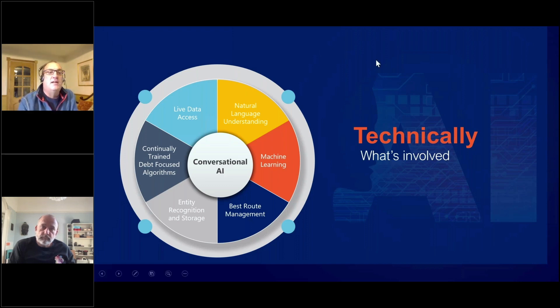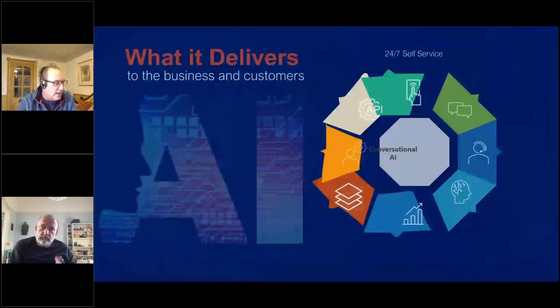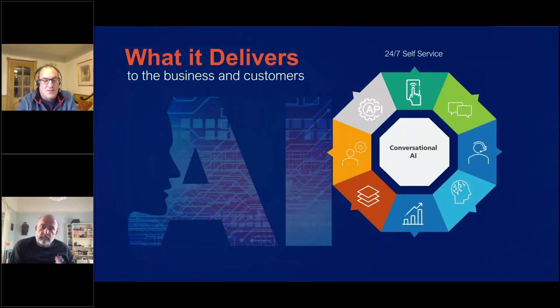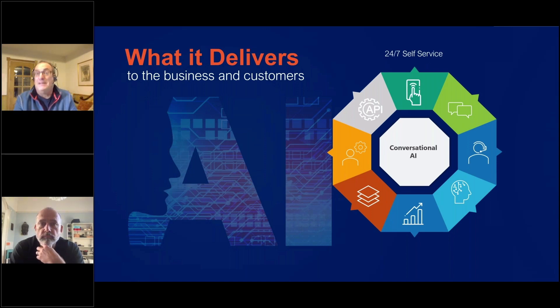The last one on here, live data access. A really key part, again. Things change all the time. You do want one version of the truth. If you can't access live data and someone's called in and made the payment over the phone and you've just sent a message out via SMS or WhatsApp or Viber or whatever it is you're using. The worst thing you can do is ask the customer for the payment when they've made it five minutes ago. So having that live access is really key.